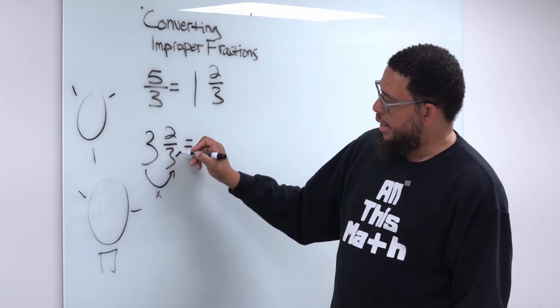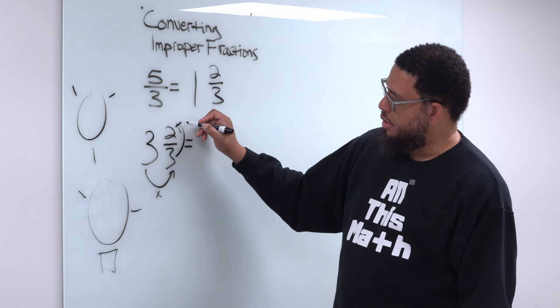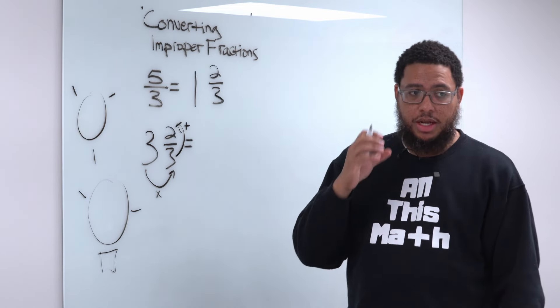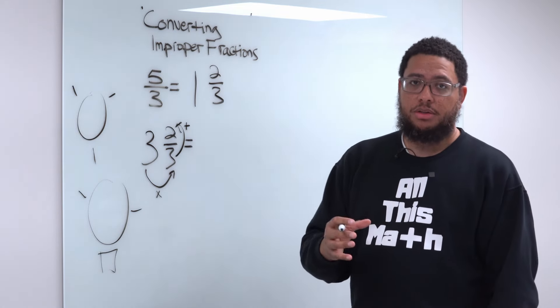And then you take that 9 and you're going to add it to this numerator, which is a 2. So 9 plus 2 gives you 11. So 11 is going to be your numerator in your improper fraction.